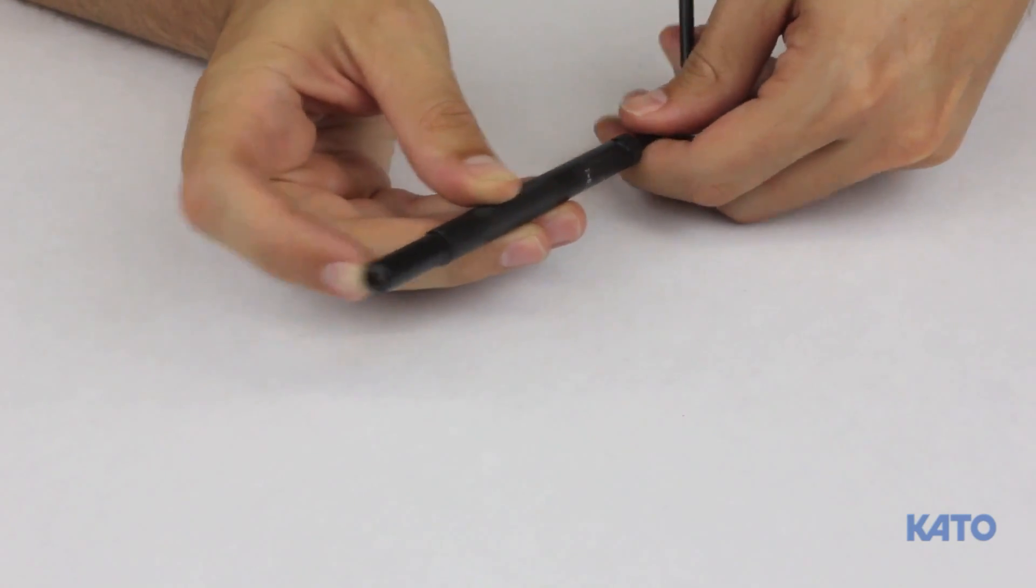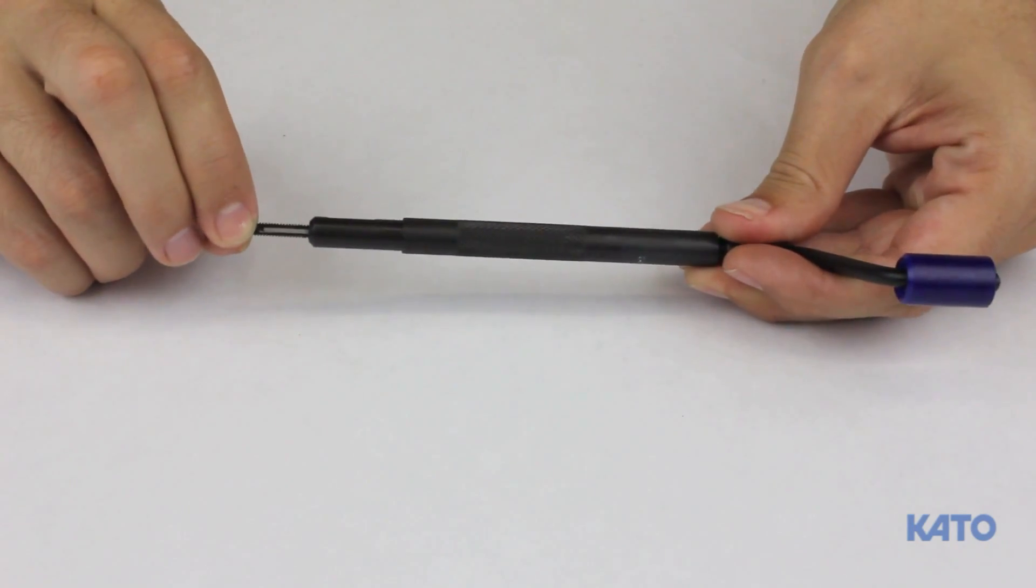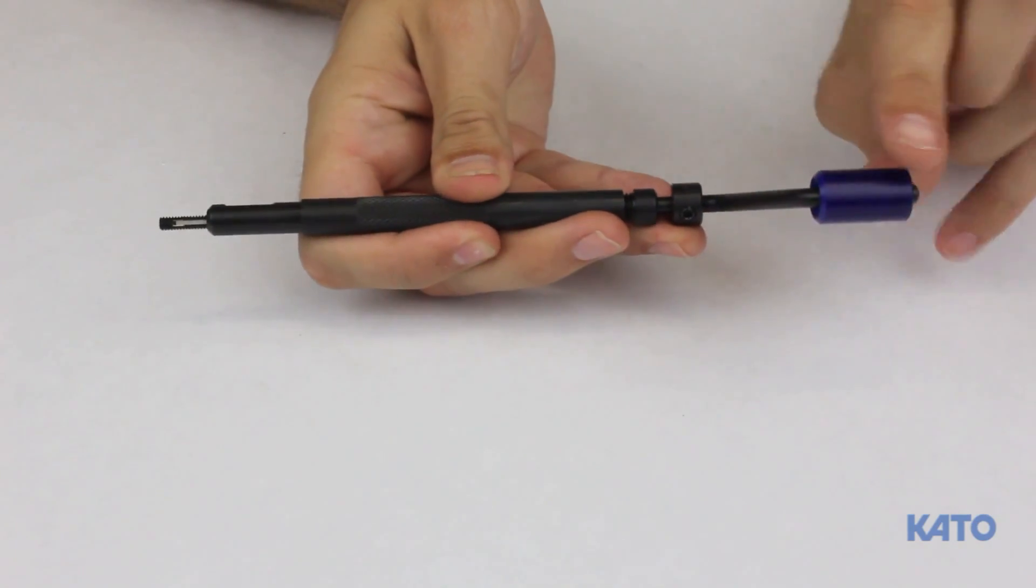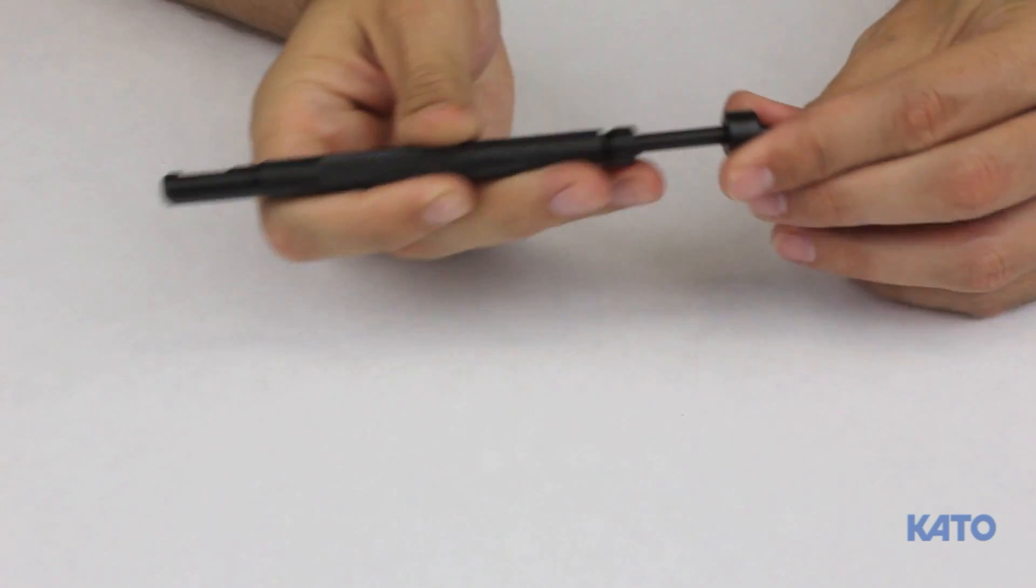This is the threaded mandrel. The Kato pre-winder hand tool also includes a pawl, spring and pin inside the mandrel. The plastic handle is connected to the back of the mandrel. Notice how the mandrel freely slides inside the pre-winder sleeve.